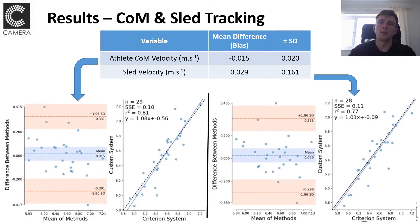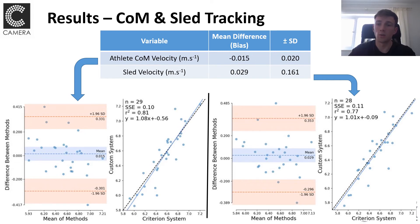Results for the center of mass and sled tracking demonstrated good agreement between athlete center of mass velocity and sled velocity when averaged across the step. It's important to note that results were averaged for the step, and results using OpenPose in particular were not able to provide an accurate full waveform. This highlights that researchers need to be careful when using pose estimation methods such as OpenPose to ensure that such a system can provide accurate and reliable joint center locations for biomechanical applications.